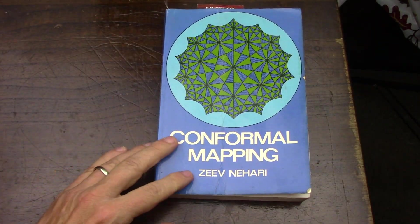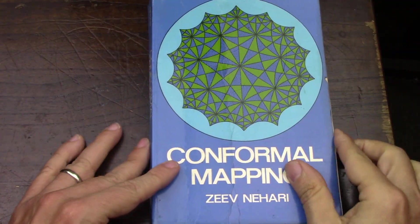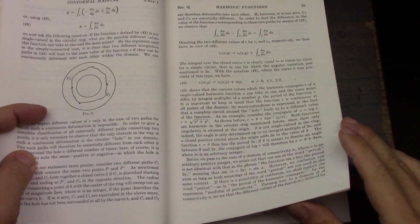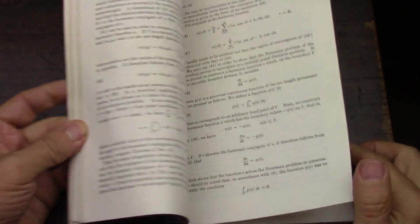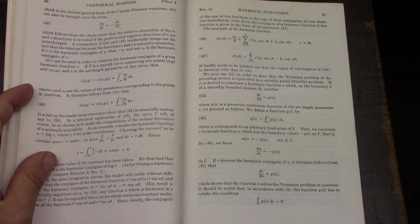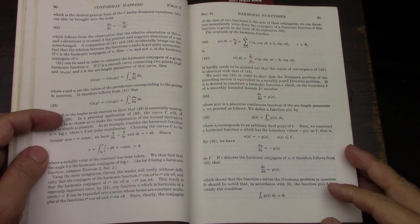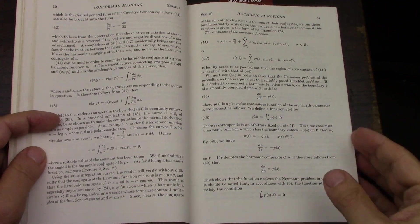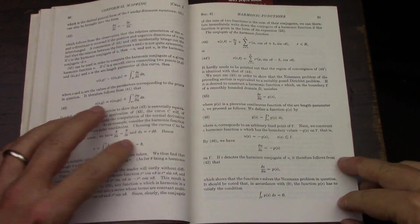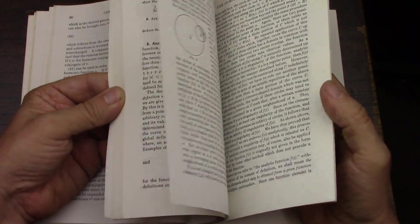And then conformal mapping by Nahari is the one that's a little, you know, the challenge book. Chapter one on harmonic analysis and harmonic functions—I found it was a little too hard. It could have been explained better. There may be a better conformal mapping book out there, maybe something called potential theory. In that case, this one may be a pass for many of you. But I really like the way things are explained, and I like taking my time and going through.